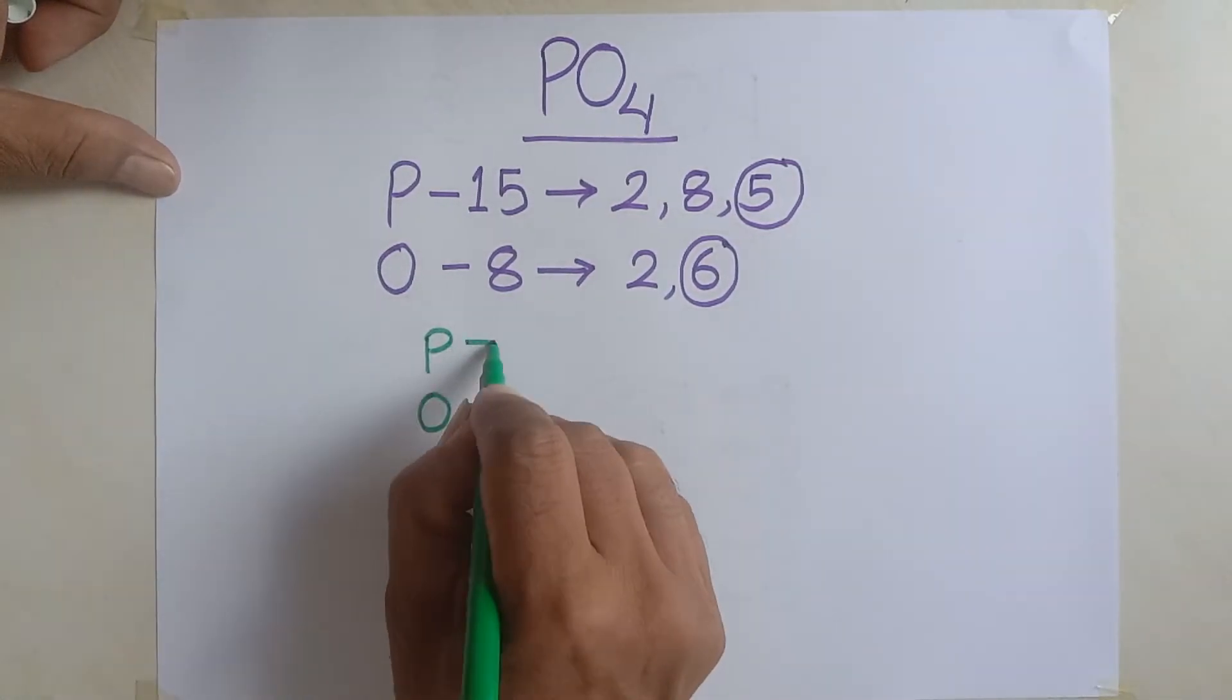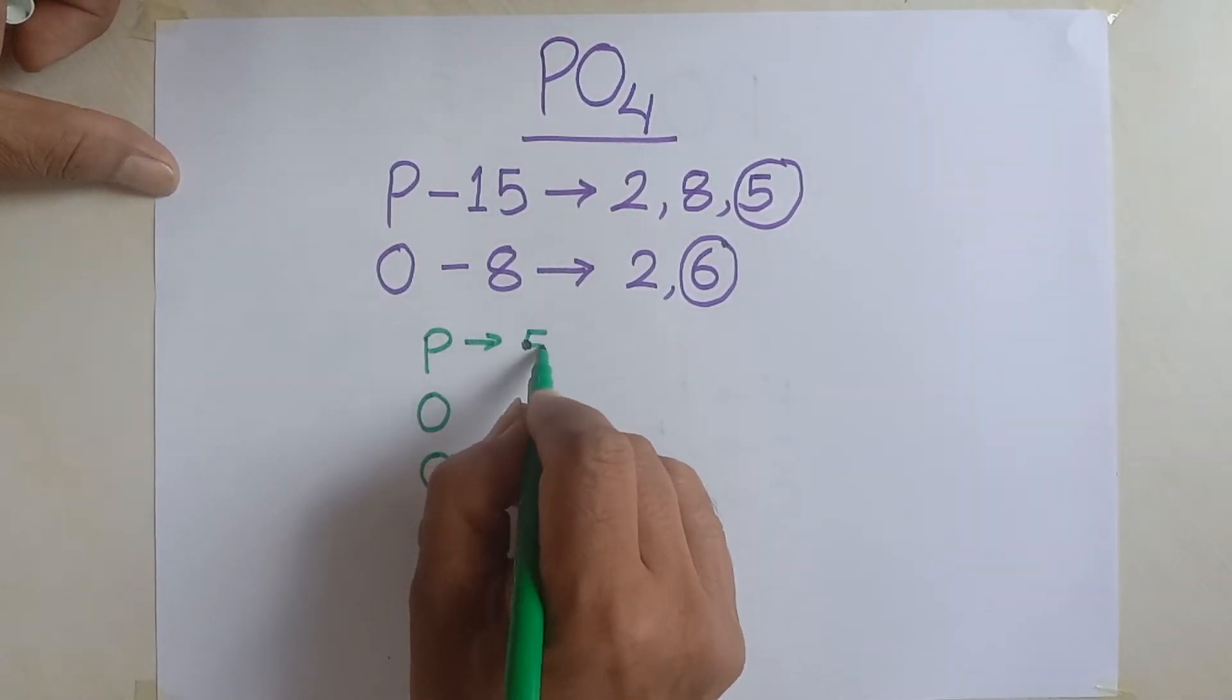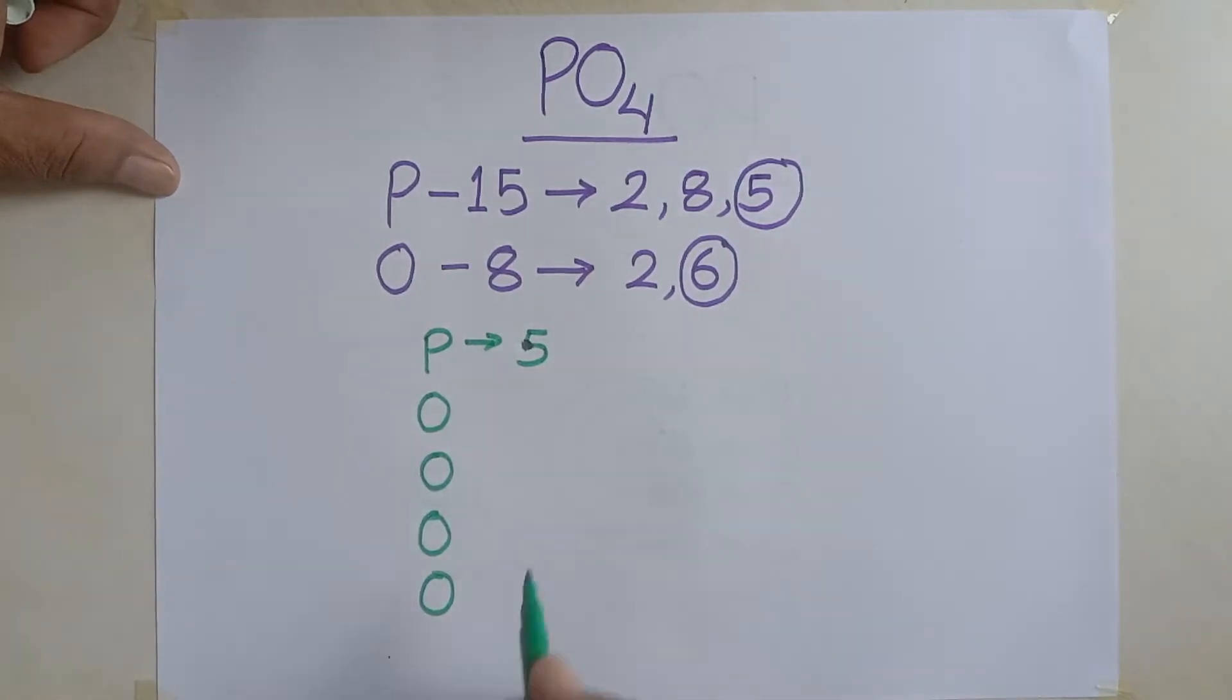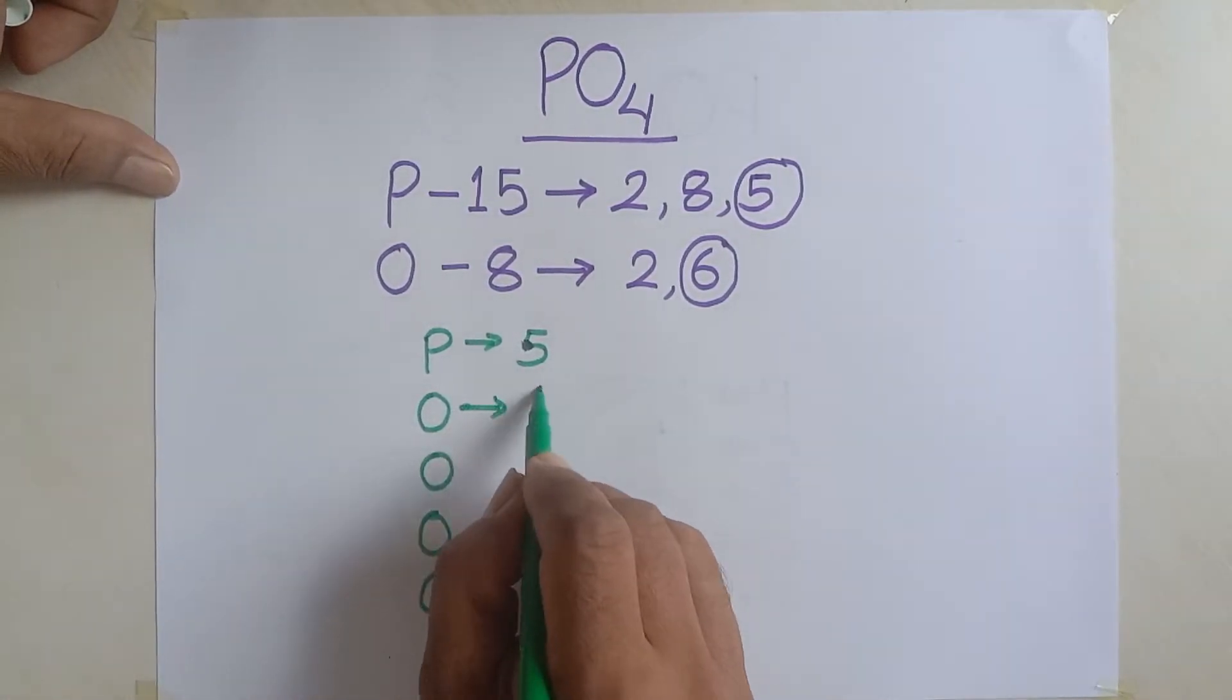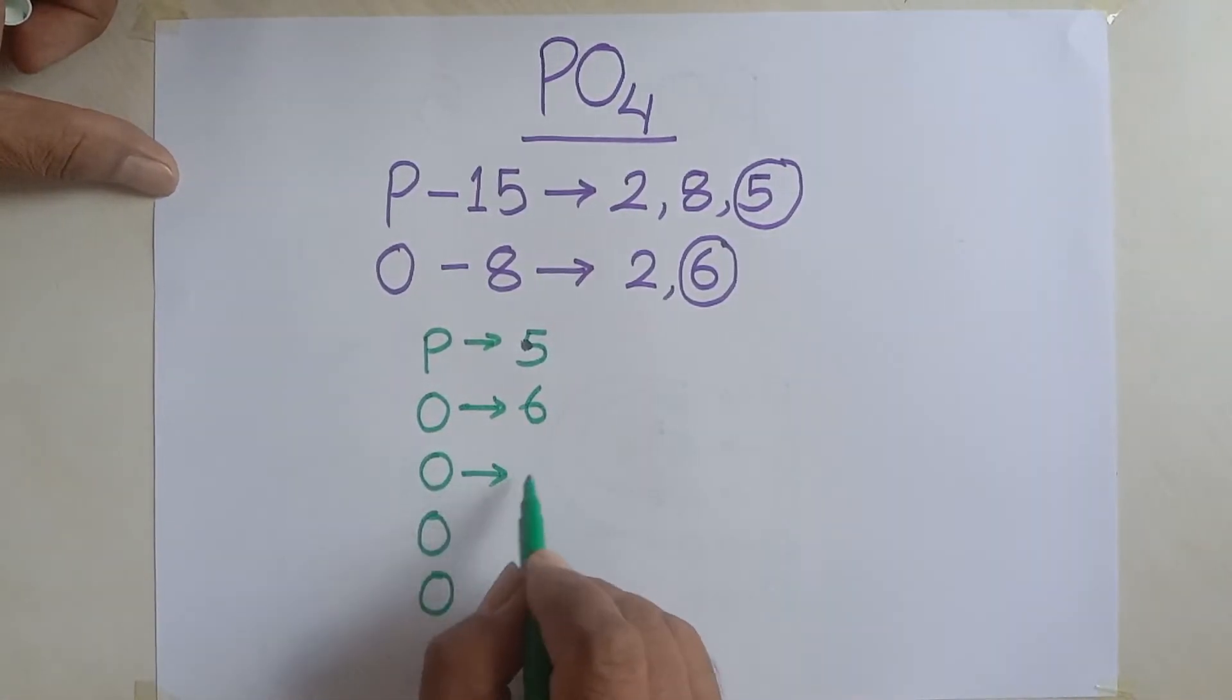Here, we have five valence electrons and here we have six valence electrons. Each of the oxygen contains six valence electrons.